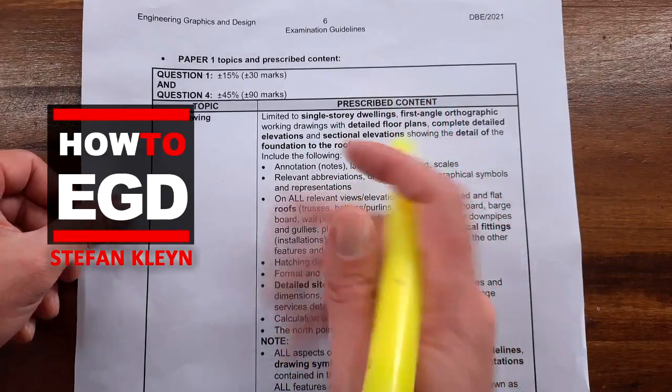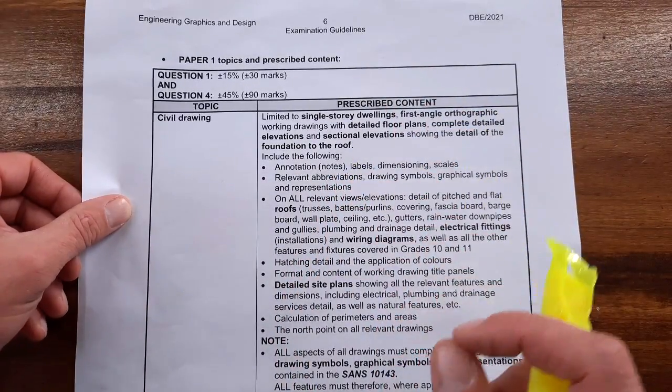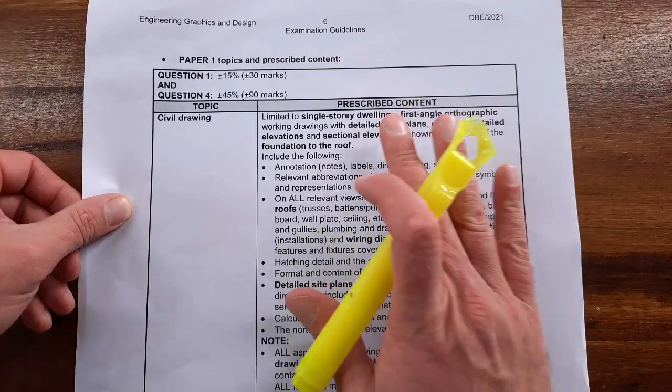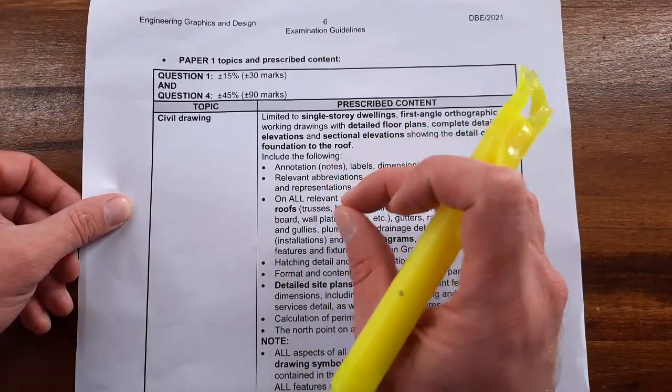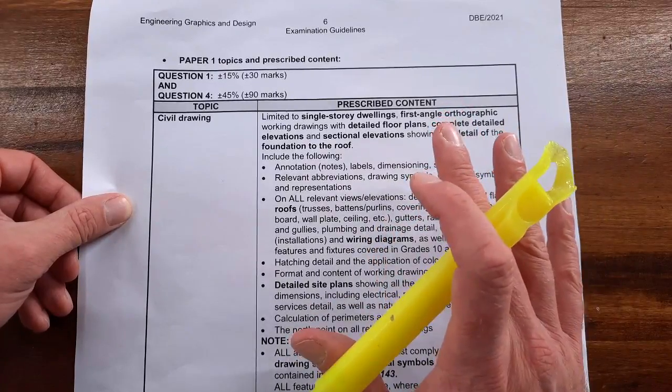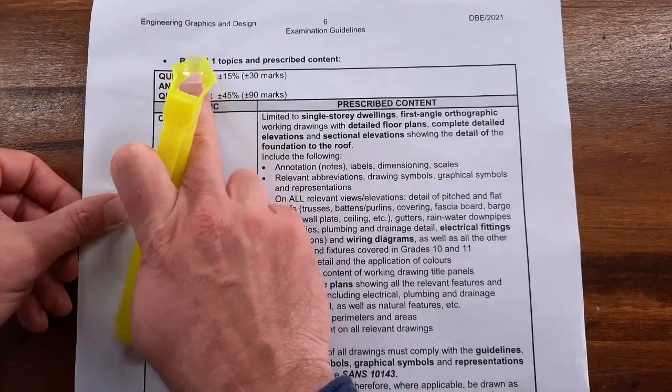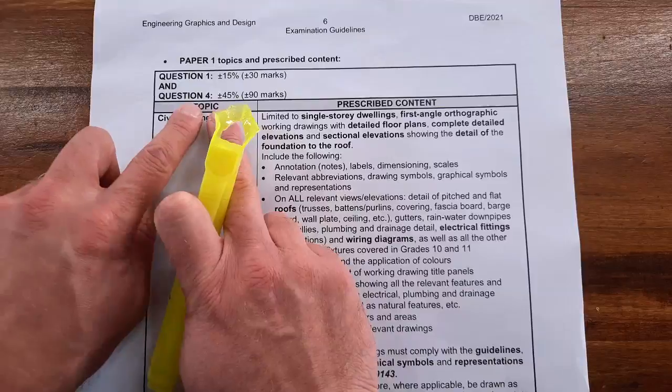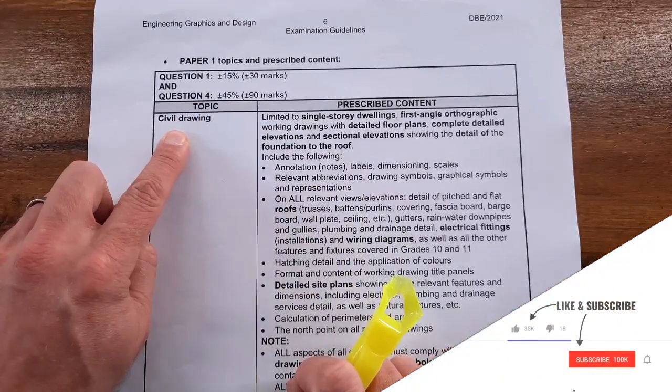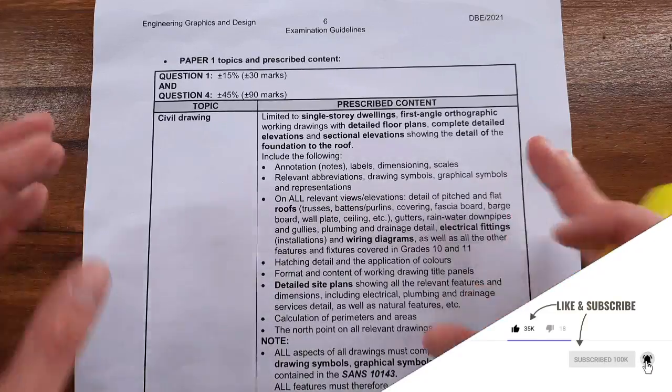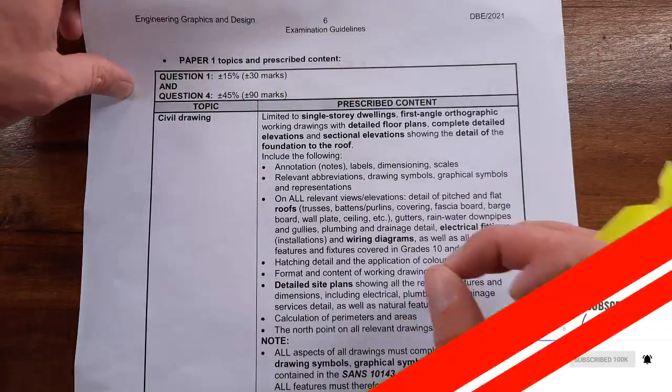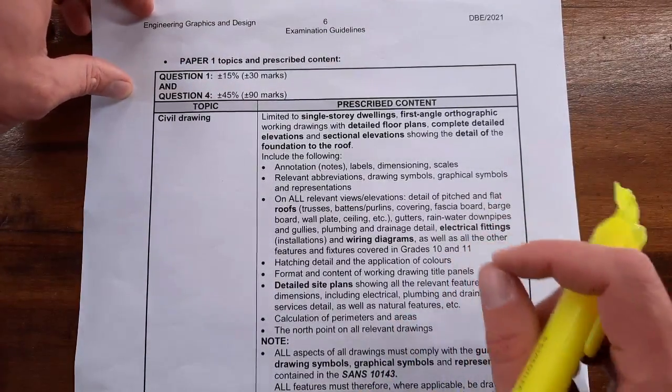How to EGD learners, we are smacking our final exams by looking in detail at each question you can expect. In this video we're looking at paper one, the last question four which is your civil drawings.